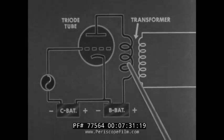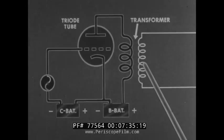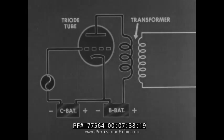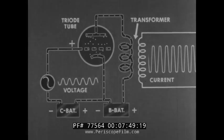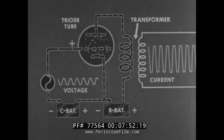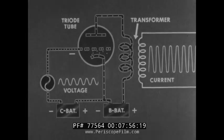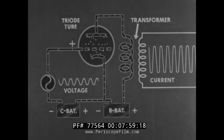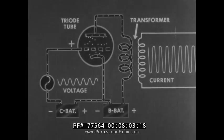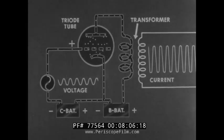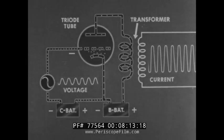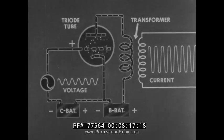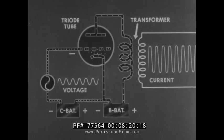The plate current passing through the primary of the transformer induces a corresponding current in the secondary. When the circuit functions, electrons pass from cathode to plate when the grid is positive, with the flow of current stopping when the grid is strongly negative. The alternator impresses a voltage wave upon the grid. The wave of current in the secondary of the transformer has the same frequency and wave shape as the grid voltage wave, but is of greater magnitude — it is an enlarged replica of the input voltage wave.